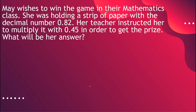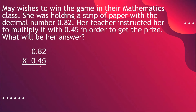Now let's try a word problem. May wishes to win the game in their mathematics class. She was holding a strip of paper with a decimal number, 82 hundredths. Her teacher instructed her to multiply it with 45 hundredths. In order to get the prize, what will be her answer? So for this one, we are going to multiply 82 hundredths by 45 hundredths. Let us just keep on multiplying.